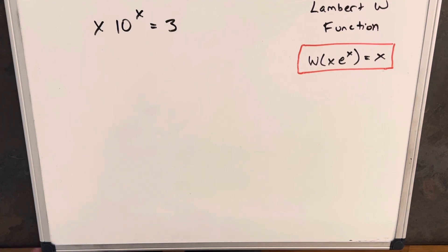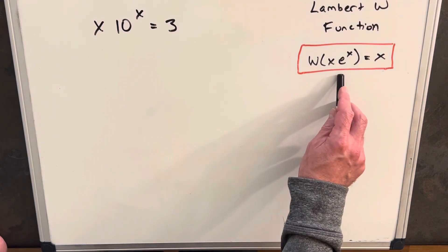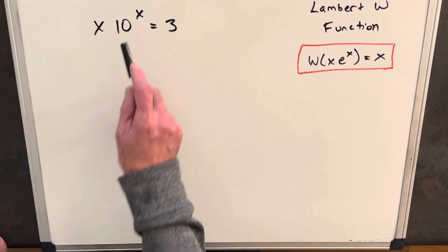Hey, another Lambert W function problem on the board. We have x times 10 to the x equals 3. I thought this was a fun problem just because it's really already in our format almost, except instead of an e, we have a 10 here.